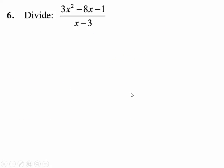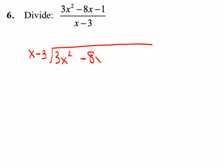Number 6: Let's divide 3x squared minus 8x minus 1 by x minus 3. So x minus 3 on the outside and 3x squared minus 8x minus 1 on the inside. It's going to take you about 4 or 5 times just to get used to it, and then it clicks. It's always about leading terms.